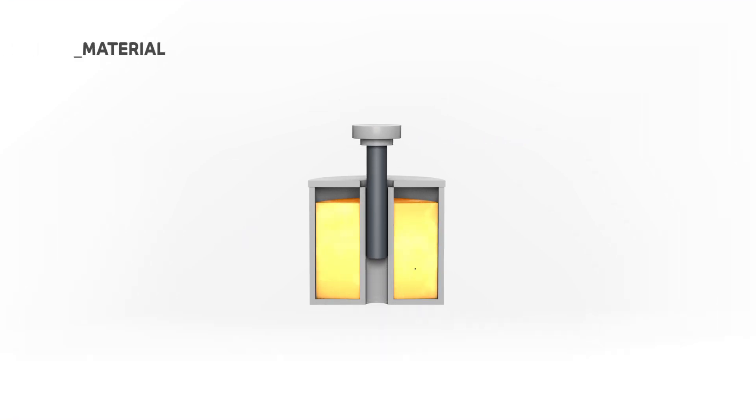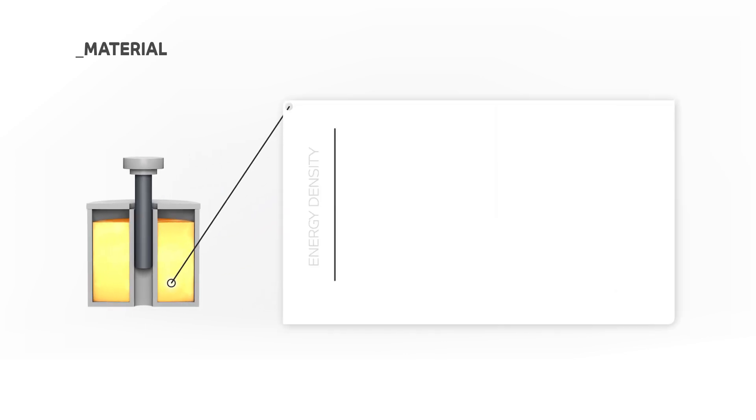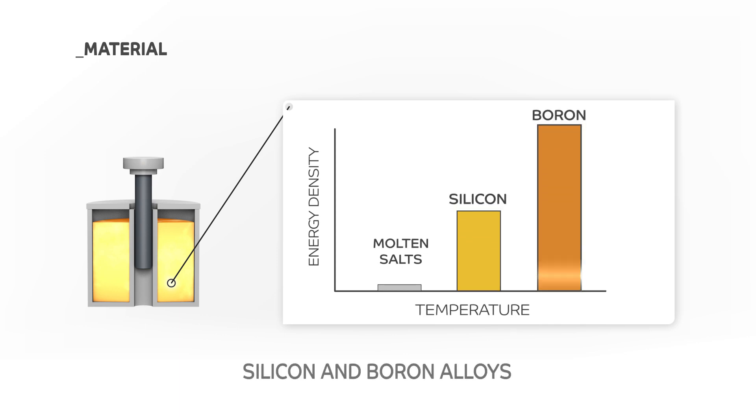The energy storage capacity of the system relies on the phase-change material thermal properties. In this regard, novel silicon and boron alloys with melting temperatures above a thousand degrees centigrade are being investigated to reach energy densities over one kilowatt-hour per liter, a value that is two times greater than the best-performing lithium-ion batteries, and ten times greater than that of currently used molten salts.